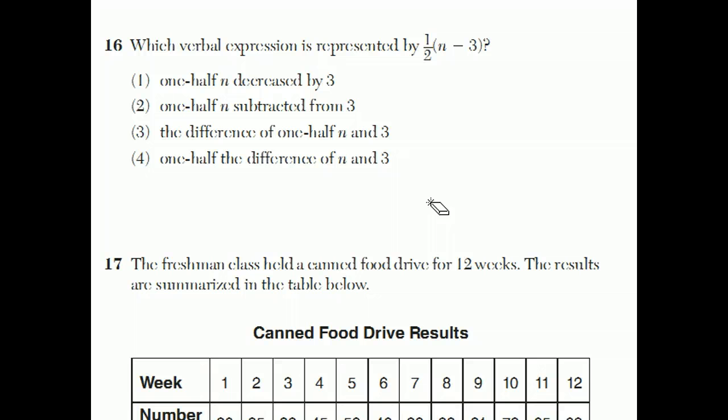This question, these choices all sound very similar, so that's why this is a tricky question. Half n decreased by 3 is 1 half n, and then decrease as minus 3. Half of n subtracted from 3, this is the most common wrong answer,